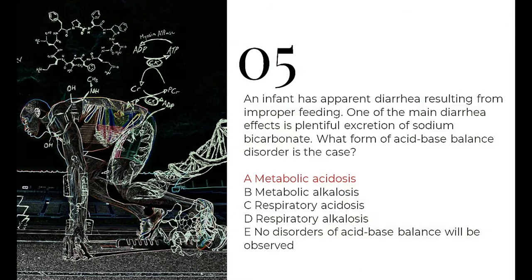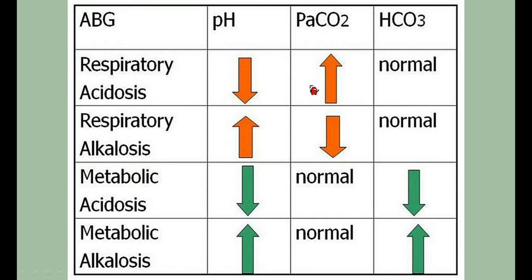The next question is about acidosis and alkalosis — disturbances in blood pH. An infant with apparent diarrhea has plentiful excretion of sodium bicarbonate in the diarrhea. They ask what type of disorder this is. There are four main forms: respiratory acidosis, respiratory alkalosis, metabolic acidosis, and metabolic alkalosis. Respiratory acidosis: decreased pH and increased partial pressure of CO₂ in the blood.